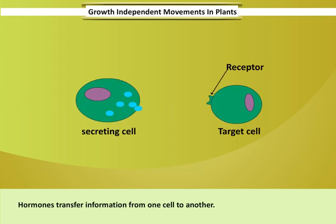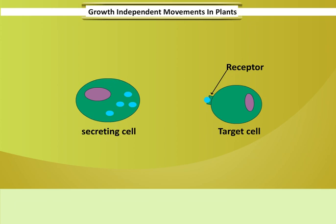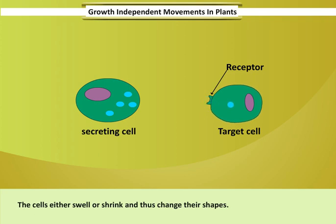Hormones transfer information from one cell to another. When the hormones reach the targeted plant cells, some movement occurs. This is because the plant cells change their shapes by altering the amount of water in them. The cells either swell or shrink and thus change their shapes.